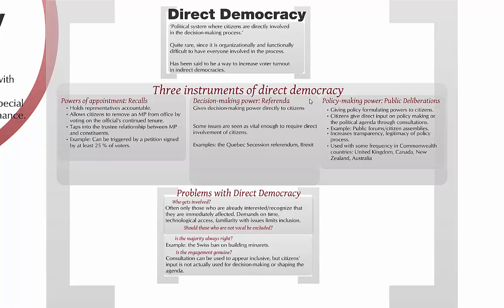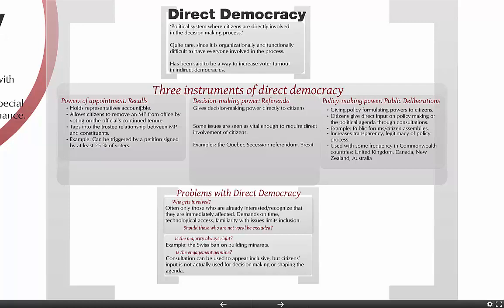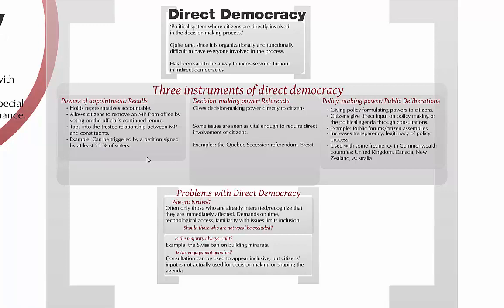First, you can have powers of appointment — you can recall people and hold representatives accountable between elections. Citizens can make a petition to remove an MP from office, which taps into the trustee relationship between the MP and constituents. For example, if at least 25% of voters sign a petition, you might get the MP removed and a new election held.